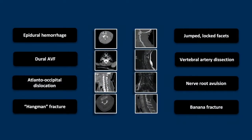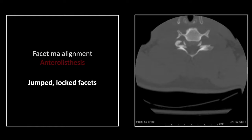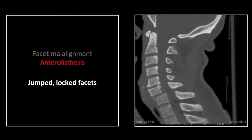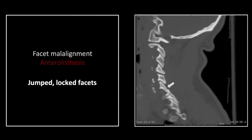Our next case is jumped-locked facets. You can see the reversal of the facet joints — upside down or inverted hamburgers. On the sagittal, this is best appreciated. You can see there is complete jumping and locking of the facets with the expected anterolysthesis of the C6 vertebral body. On the opposite side, it is frequently a bilateral phenomenon with jumping and locking of the facets.